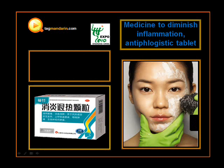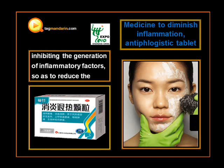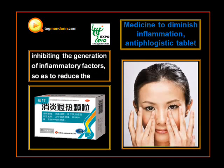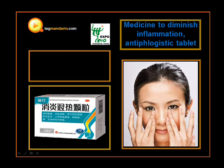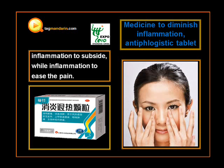For example, agar is a kind of white plant and can be used to cook soup or salad. It also has the medical function to diminish inflammation and reduce heat.